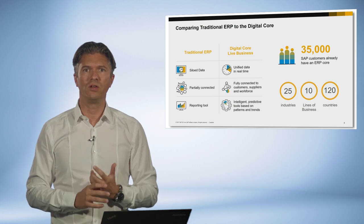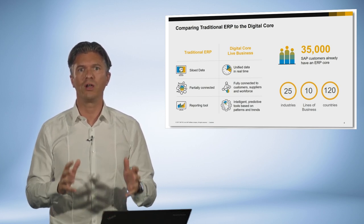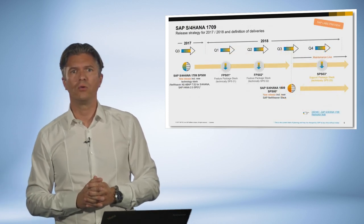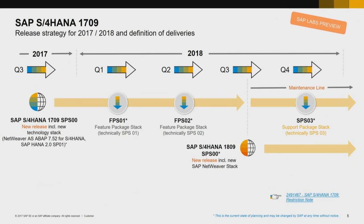That is what SAP S4HANA is bringing to you now with a third release bringing new functional and technical innovations. Regarding release strategy, most of you will know that SAP is delivering one major on-premise release per year. SAP S4HANA 1709 is the current go-to release. SAP is planning to release Feature Pack Stack FPS for the 1709 release later in Q1 2018. This will be the first of two FPS that will introduce new, non-destructive and non-mandatory capabilities for the 1709 release. Those will be followed, as usual, by classical SPS support package stacks.